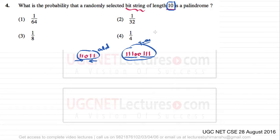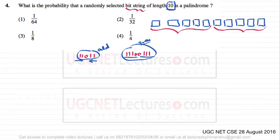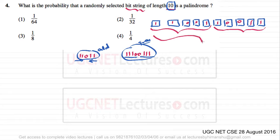There are 10 bit positions, represented by these blocks. For a string to be a palindrome, any combination of the first five bits must appear in exactly reversed order in the last five positions. For example, if the first five bits are '1 1 0 0 1', then the last five must be '1 0 0 1 1'. This repetition makes the complete string a palindrome.